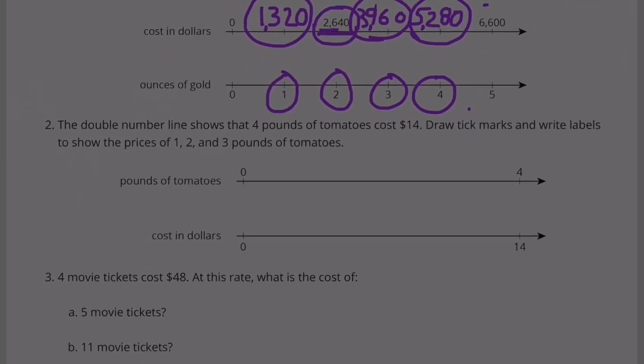Number two: the double number line shows that four pounds of tomatoes cost $14. Draw tick marks and write labels to show the price of one, two, and three pounds of tomatoes. Four pounds costs $14, so half of that would be two pounds at half of $14, which is $7. Between two and four pounds would be three pounds.